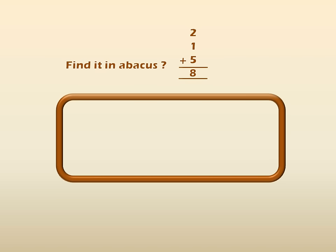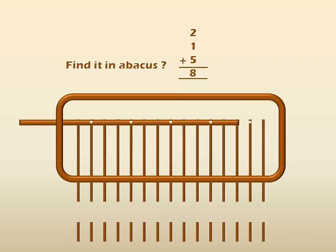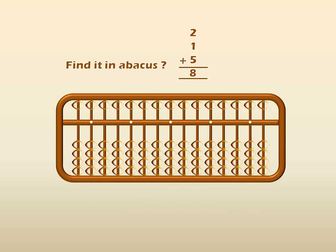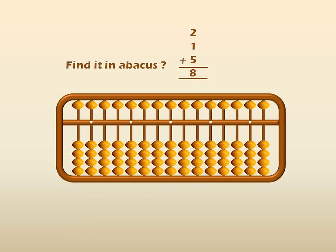So, this is the abacus frame. And now, these are the beads. With these beads, we have to find out the answer. So, first one is 2. To get 2 in the 1st place, move 2 beads up. Then, the answer is 2. So, again we have to add 1 here. So, move 1 bead up to the answering bar. So, the answer is 3 here.